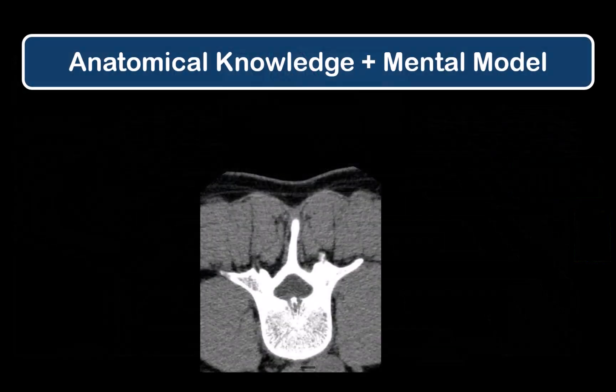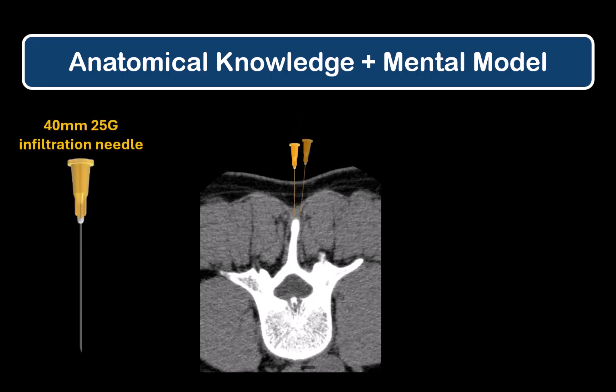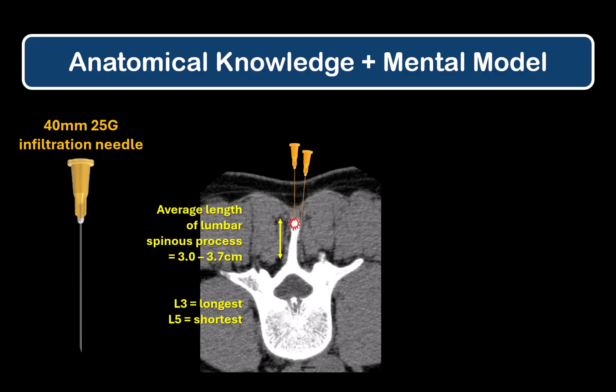There are a few simple guiding principles, particularly if you're using a midline approach. First, any bone that you contact at a shallow depth — say with your 40 millimeter skin infiltration needle — is going to be the tip of the spinous process. The average anterior-posterior length of the adult lumbar spinous processes is about three and a half centimeters. So unless your patient is literally skin and bone, it's highly unlikely that you'll reach their lamina or the canal with this needle.